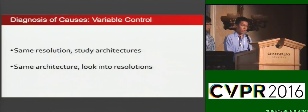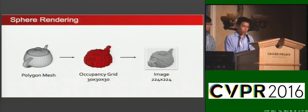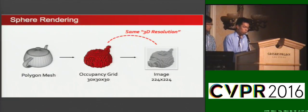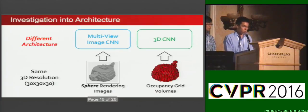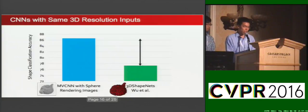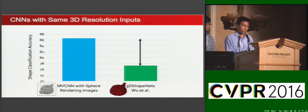We investigate the effects of each individual cause. To compare architectures, we unify resolutions of input images and volumes. We introduce sphere rendering, a method to convert a volume to an image. The sphere-rendered images, although still with high pixel resolution, have the same low 3D resolution as the volume. Therefore, by sphere rendering, we can provide both architectures with inputs of the same resolution. We notice that even when inputs have the same 3D resolution, 3D ShapeNets is still far behind multi-view CNN, indicating large room to improve 3D CNNs.